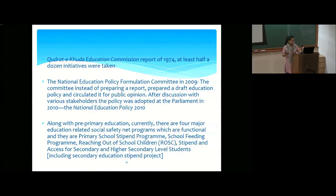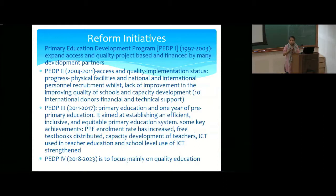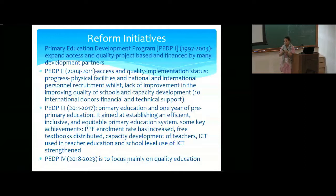Among reform initiatives, the Primary Education Development Program (PEDP) has gone through multiple phases. PEDP1 was project-based and did not work well. PEDP2 focused on expanding access and quality. PEDP3 focused on access, quality, and equitable primary education, during which pre-primary education was implemented and free textbooks were successfully distributed to more than 90 million children. PEDP4 has just started and the implementation status is not yet known.